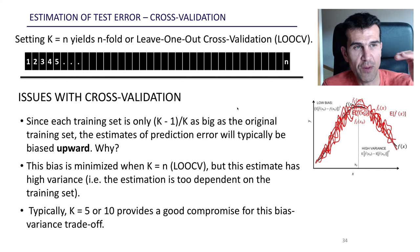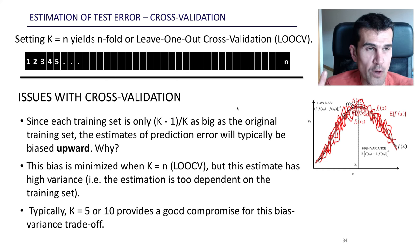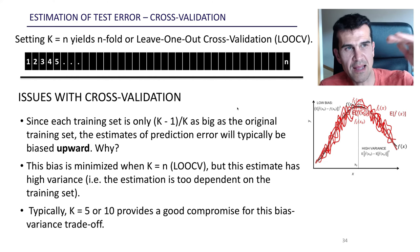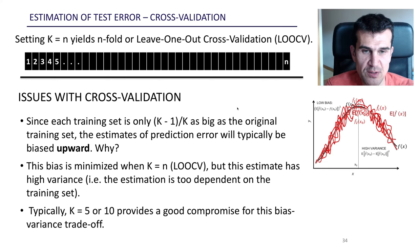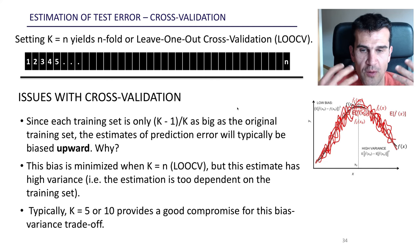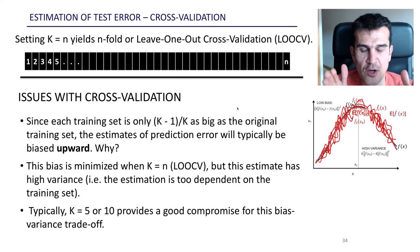This bias is minimized with leave-one-out cross-validation, because each model being fitted uses pretty much all the data — all observations except one. So the test error of each of these models will be very similar to the test error of the model trained with all the data. The problem, however, is that these n different models are really similar — they're fitted with almost the same data, differing by only one observation — so all these models are highly correlated.